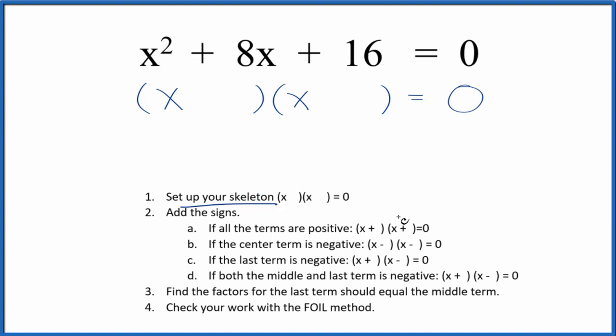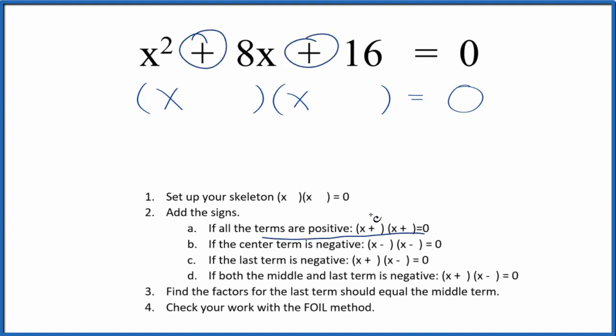Now we want to add the signs into our skeleton equation. When we have a positive here and here, all the terms are positive, so we just put positives here in our skeleton.